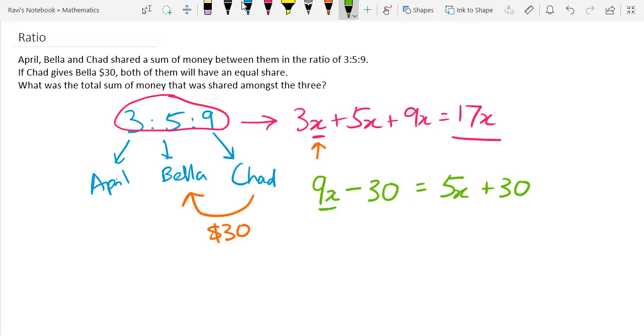And Bella, who has 5x parts of money, is going to receive $30. And we know that once this thing happens, they both have an equal share. So this is important because this forms the basis of the equation that we need to solve.